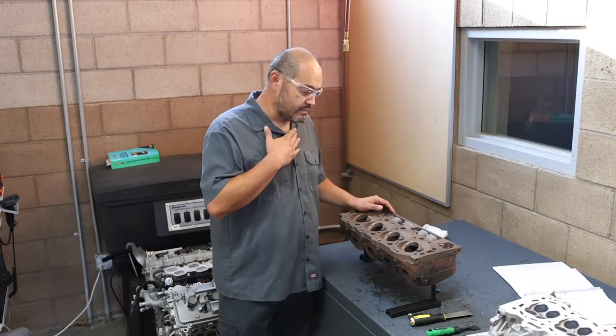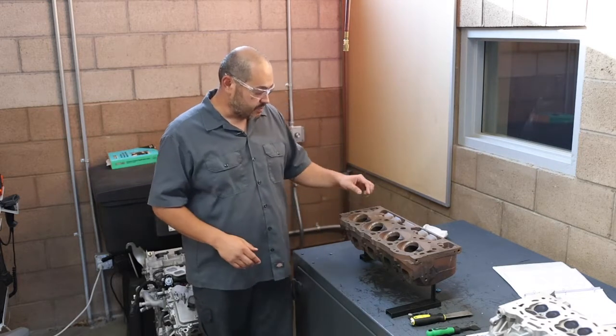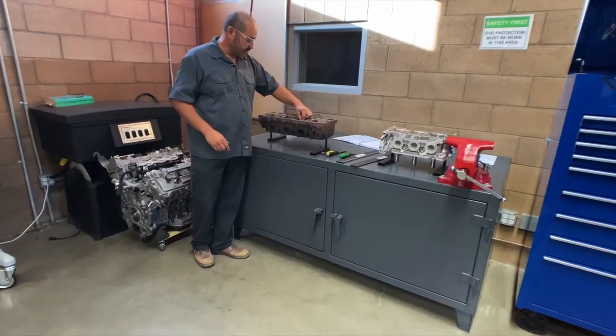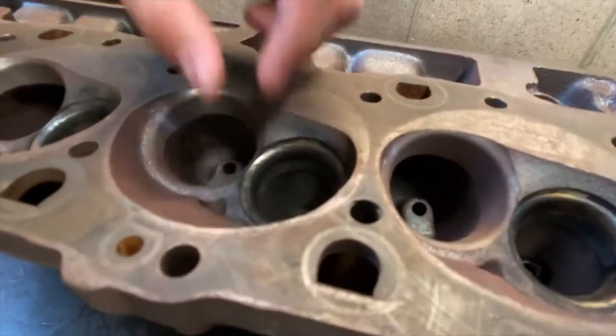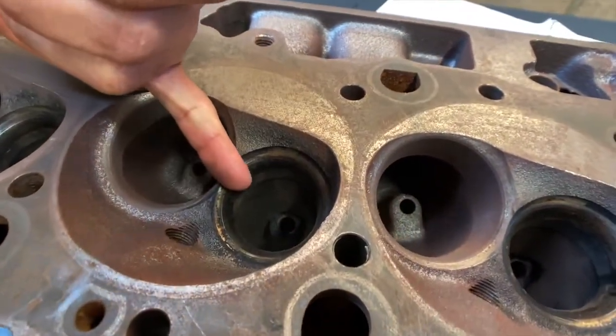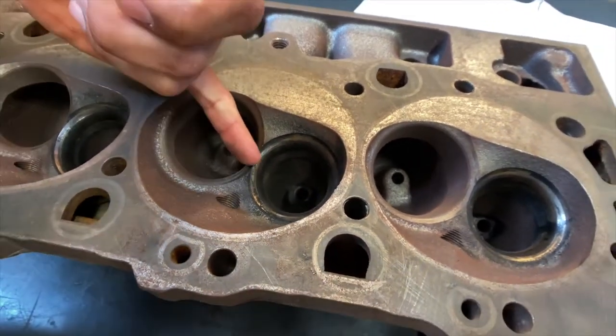The first one where I've seen most of the cracks in my experience is between the valves. In between the valves is a very narrow section in the combustion chamber and sometimes you'll see a crack that just goes right across from the exhaust to the intake valve. This cylinder head doesn't have any cracks.